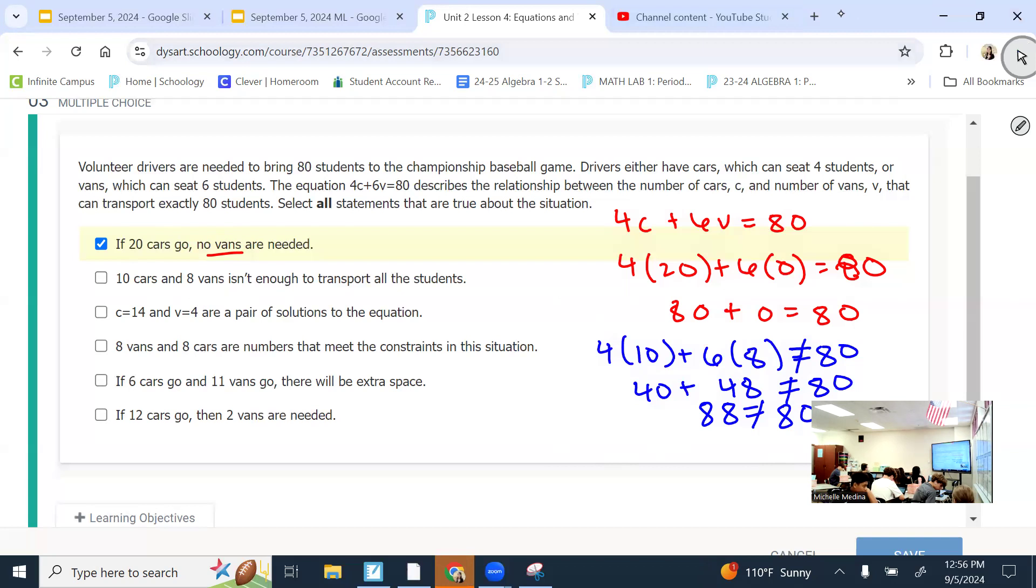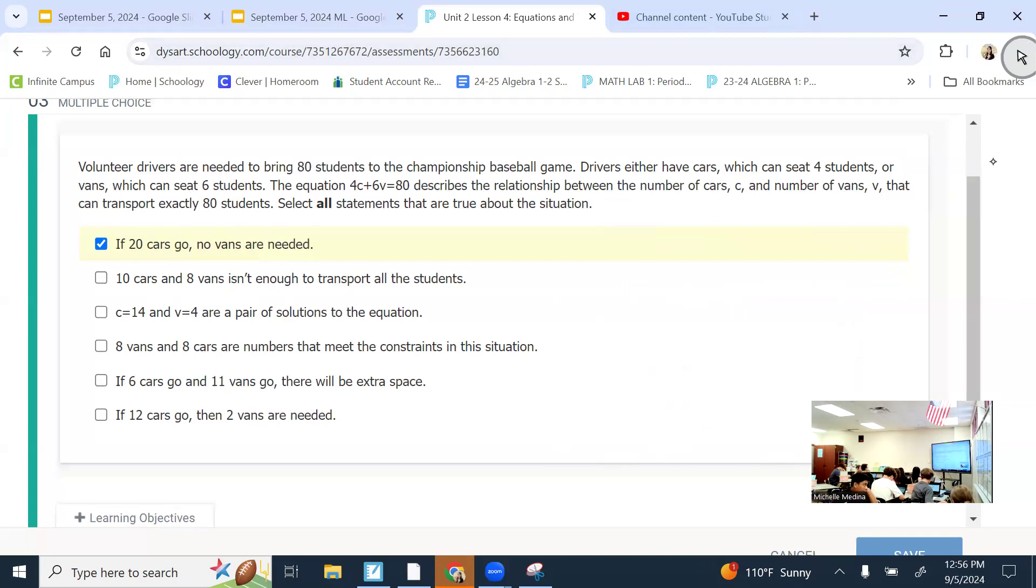Now we have C equals 14 and V equals 4 are a pair of solutions. So, if that's true, I should be able to plug it in, 4 times 14 plus 6 times 4. What's 4 times 14? 56. What's 6 times 4? 24. And what is 56 plus 24? 80. So, that one makes it true. So, these are solutions. I would pick that.